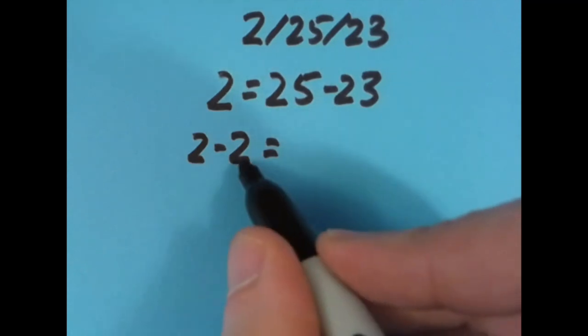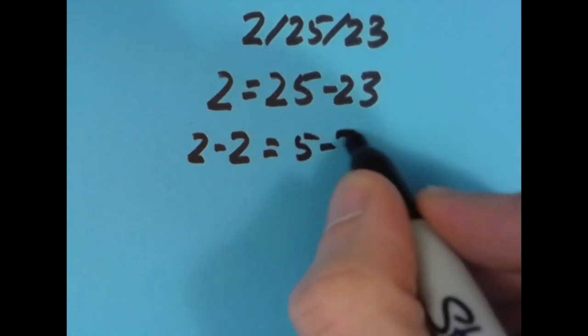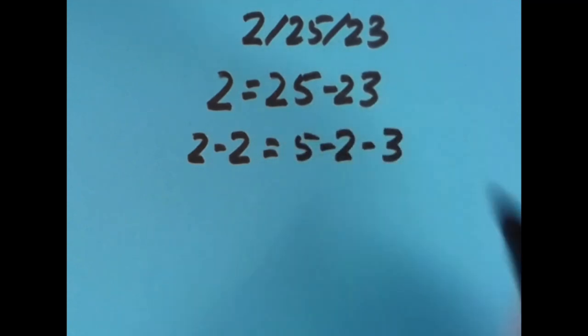So with subtraction, I said 2 minus 2 is 0. 5 minus 2 is 3. 3 minus 3 again is 0, so just all subtraction.